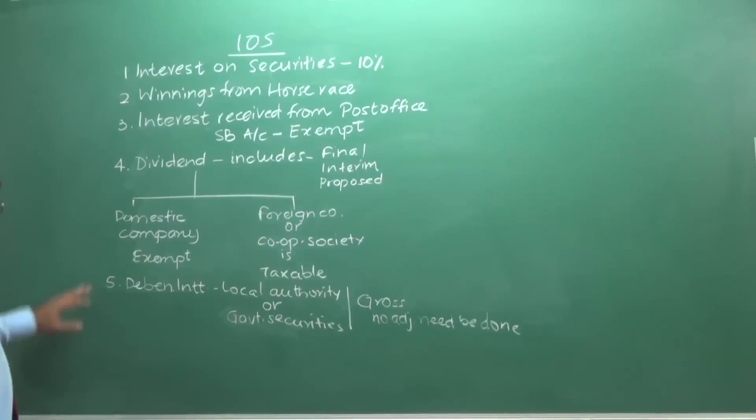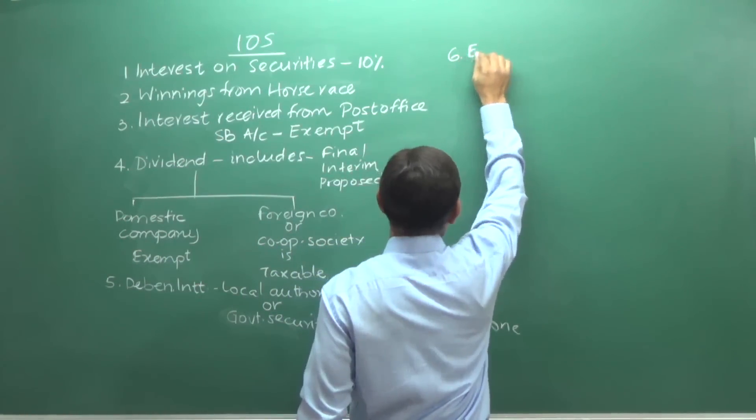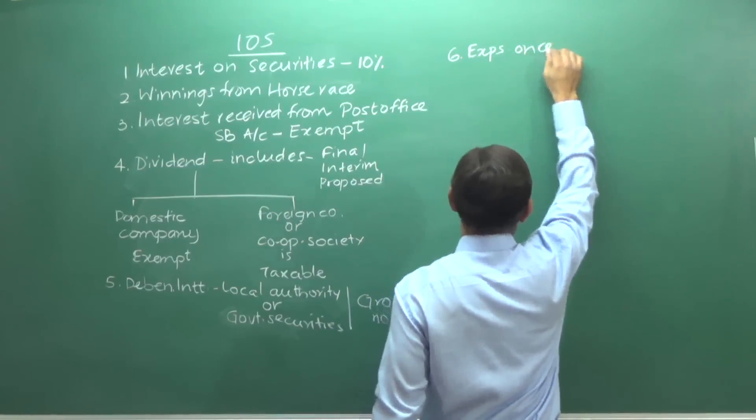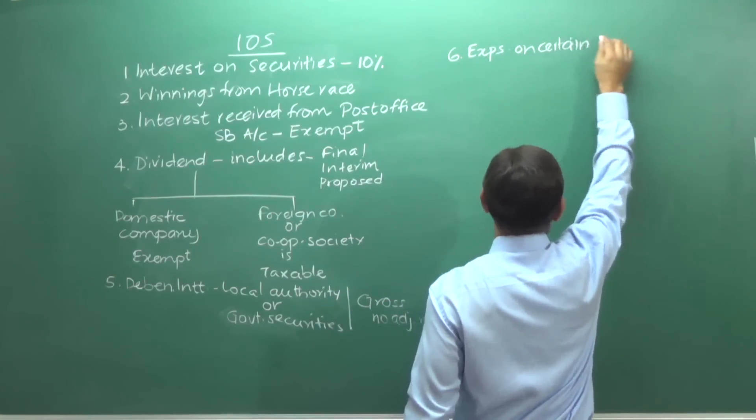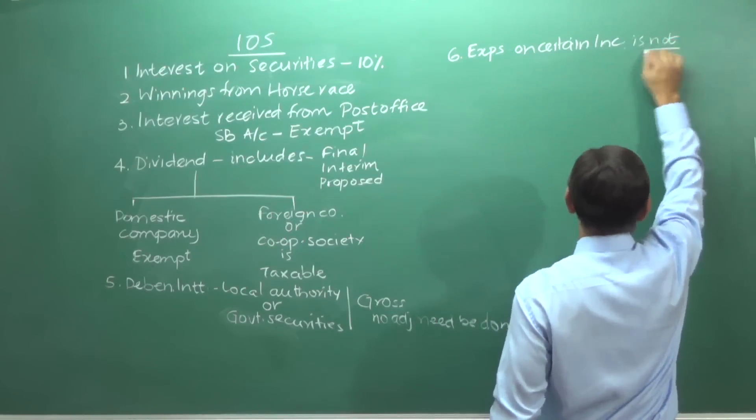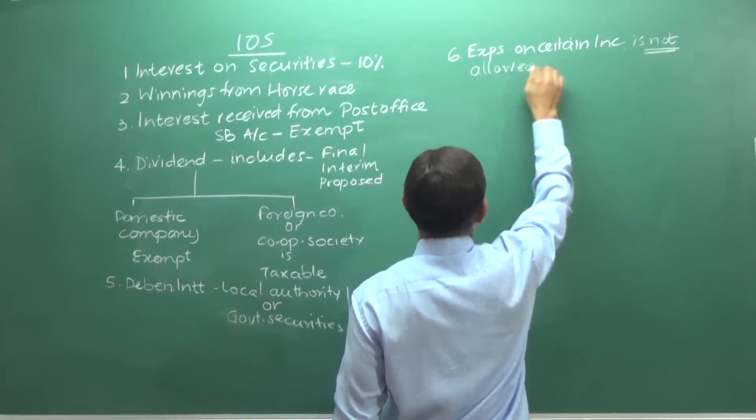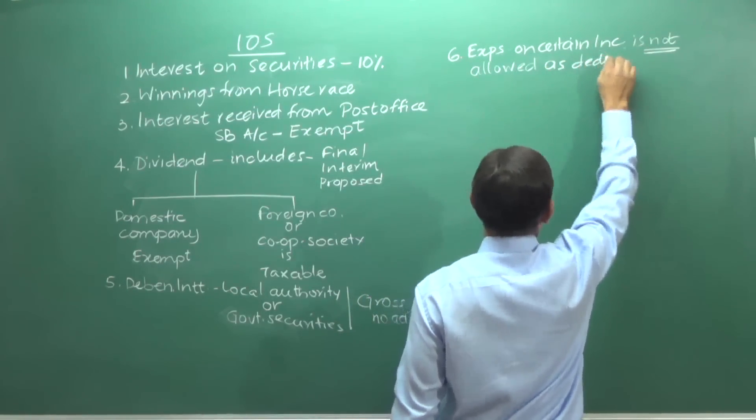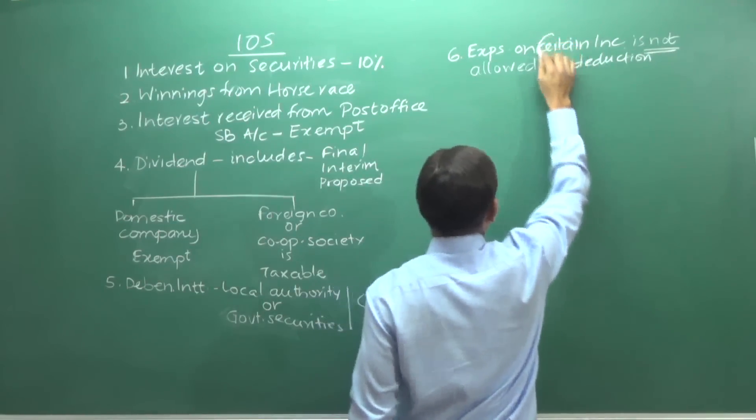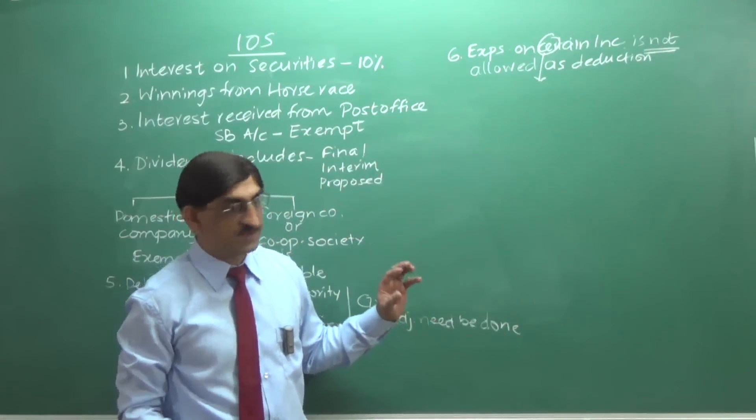So with this, we have covered five items. The sixth one is certain expenses. Expenses on certain income is not allowed as deduction. The certain word certain means it covers certain expenses, certain incomes.